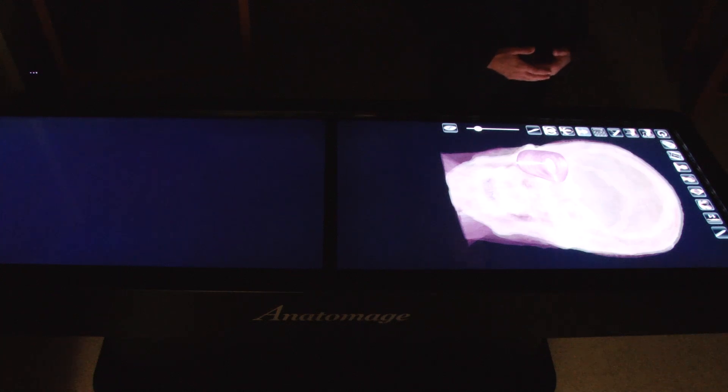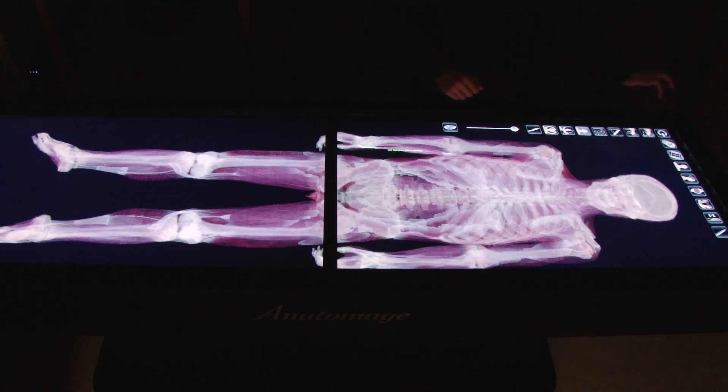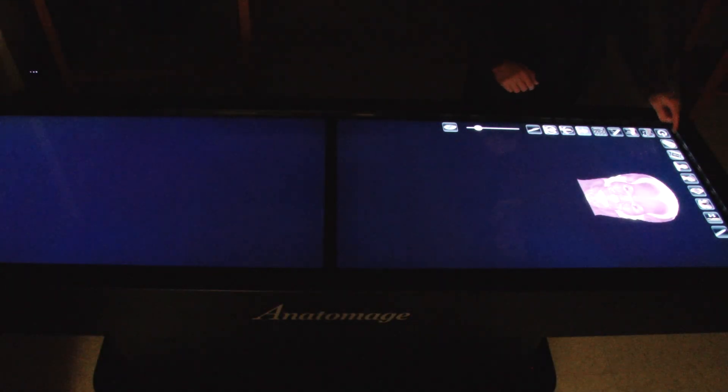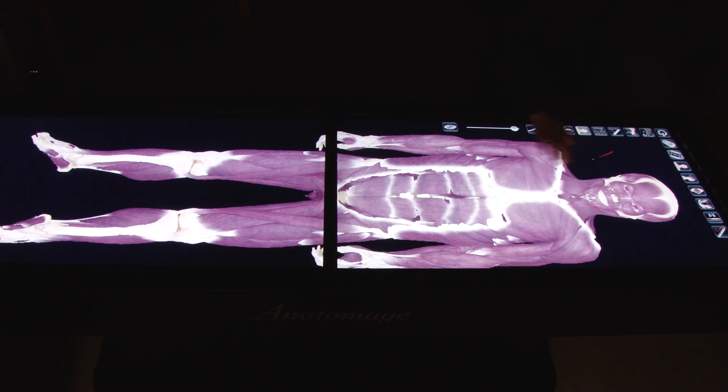They are able to annotate structures for quizzes and self-study. They are able to individually ghost image a structure relative to other structures, as you see here. And the table will identify those structures for the student if they are having trouble.